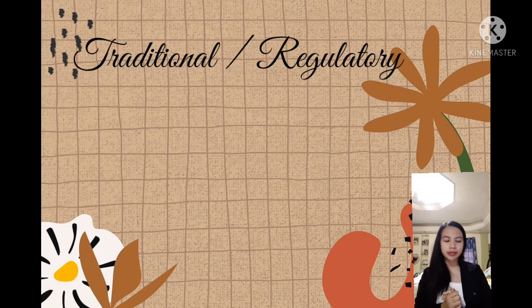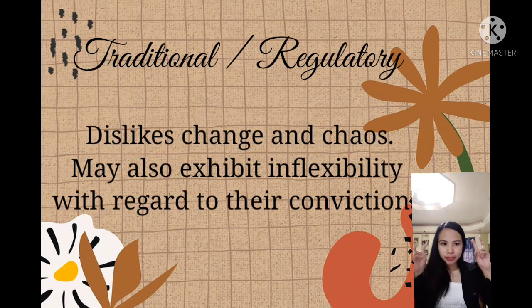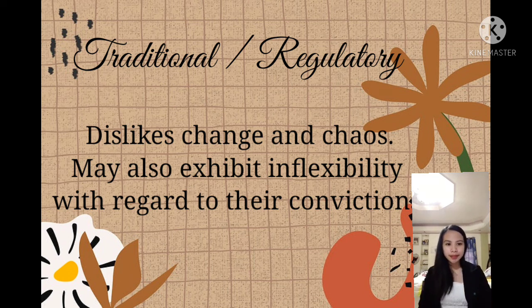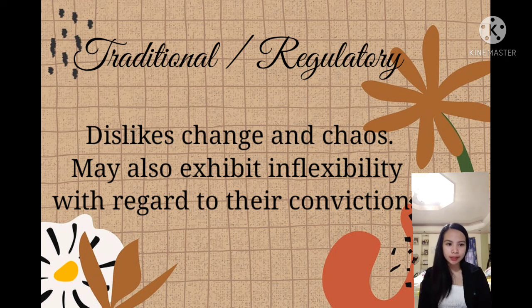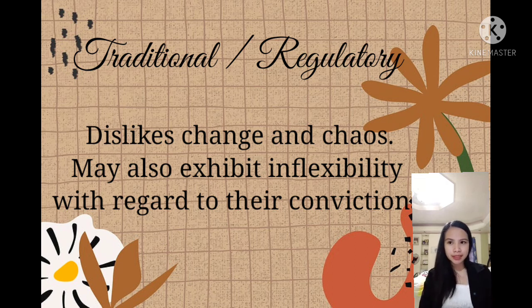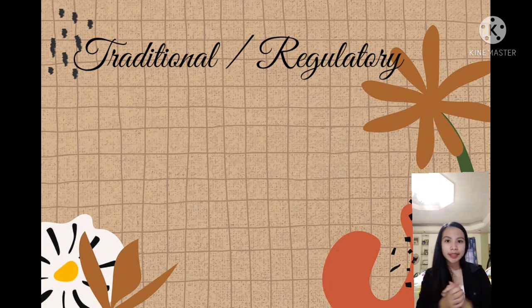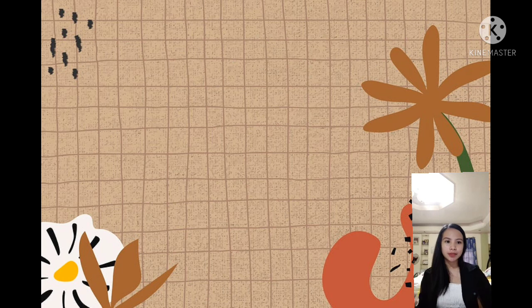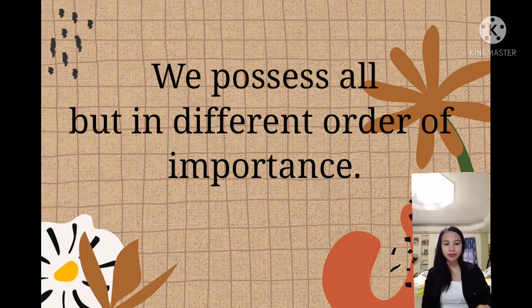The last one is traditional or regulatory — others call it religious man. Unity and order; their dislike of change and chaos may also exhibit inflexibility with regard to their convictions. These are the traditional people whose mindset is: from the many individual meanings of life, I will interpret, understand, and seek a system for our living. These are people who want balance and unity, who try to see things in a more meaningful way.